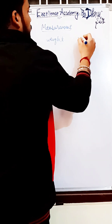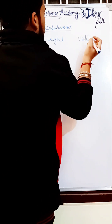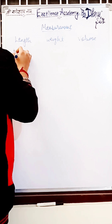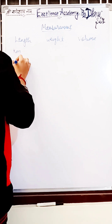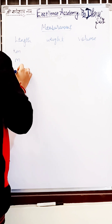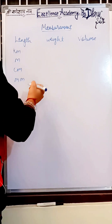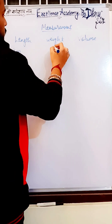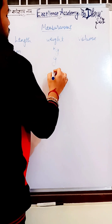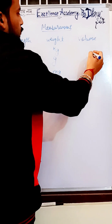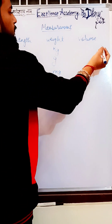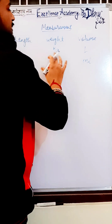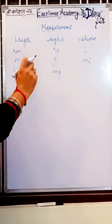Now, if we talk about length — the standard unit to measure length is kilometer, and meter is also there, then centimeter and millimeter. If we talk about weight, the standard unit can be gram, then kilogram, then milligram. Then comes volume — first of all we have liter, and milliliter is also there.